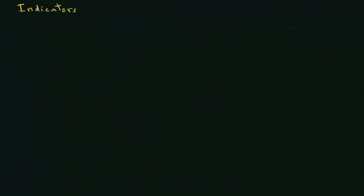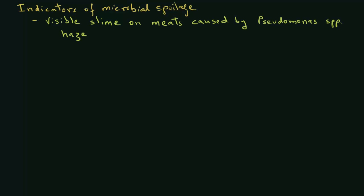Now, there are several indicators of microbial spoilage of foods. For example, there may be visible slime on meats that is often caused by Pseudomonas species. In beer, one may find haze, which is due to the presence of lactic acid bacteria. And also, mold is visible on bread that has spoiled.